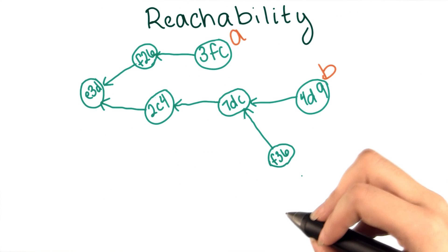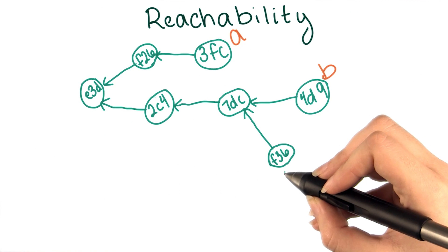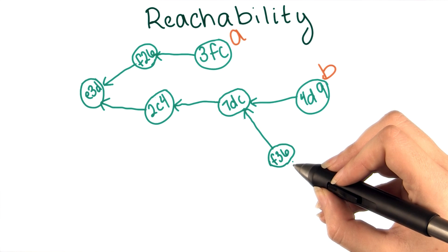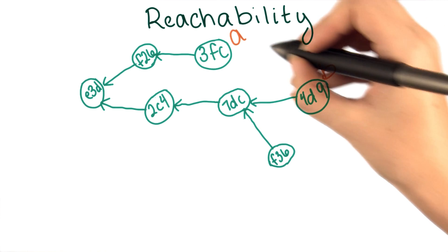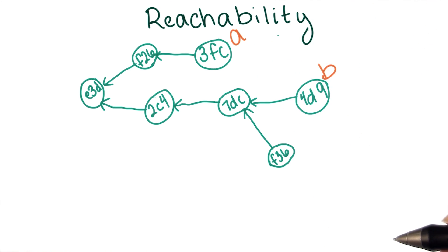To drive home this concept, we've created a fictional diagram. We've used shortened git-like commit IDs to label each commit, and we've just used letters to label the branches.